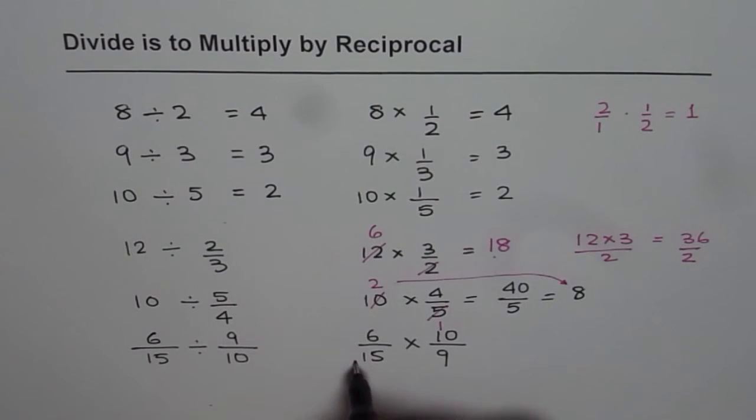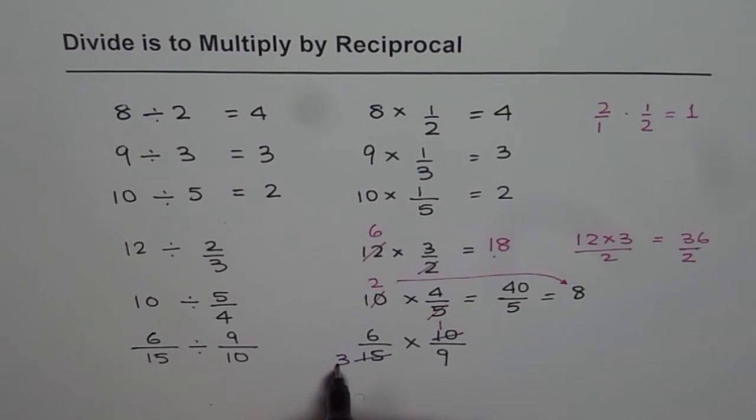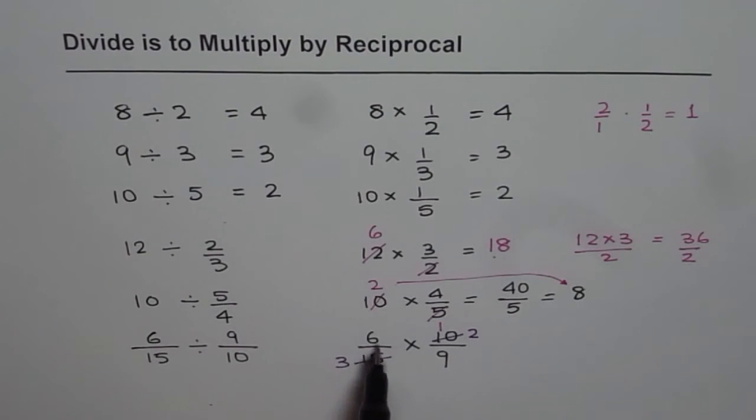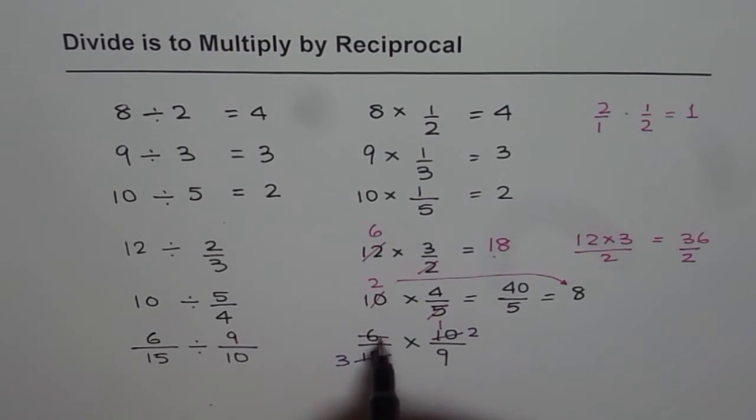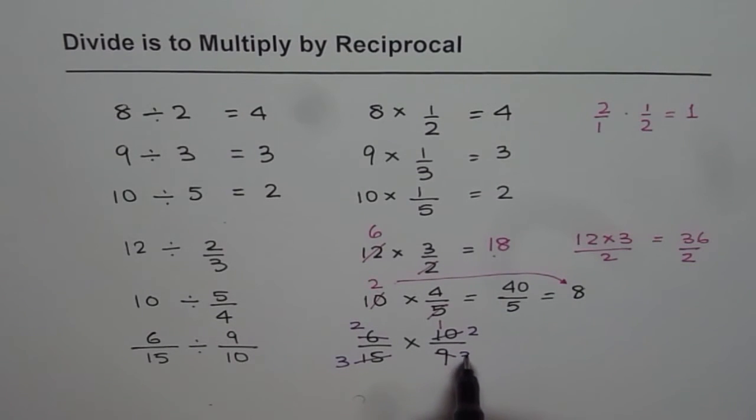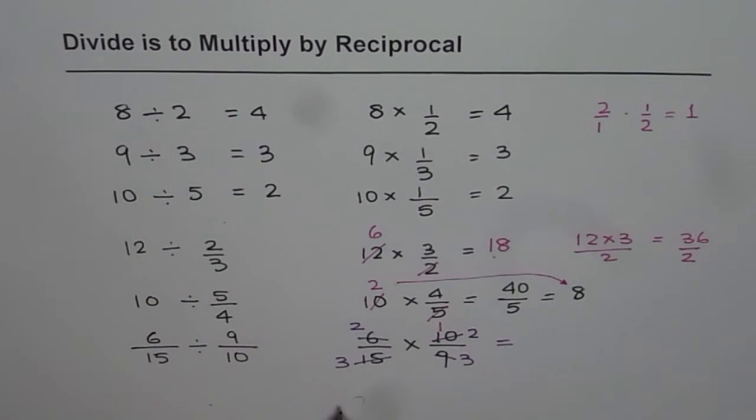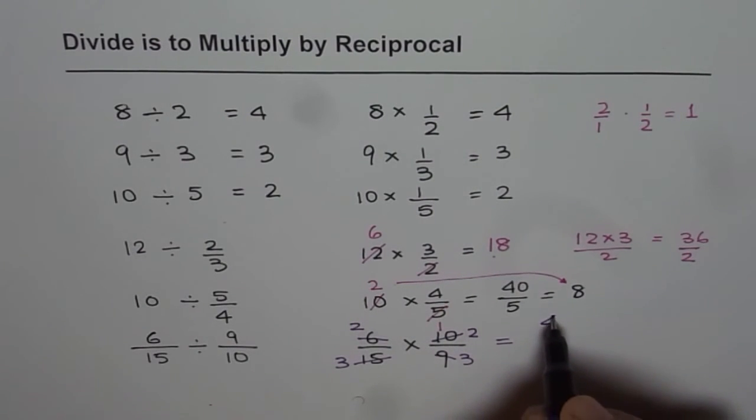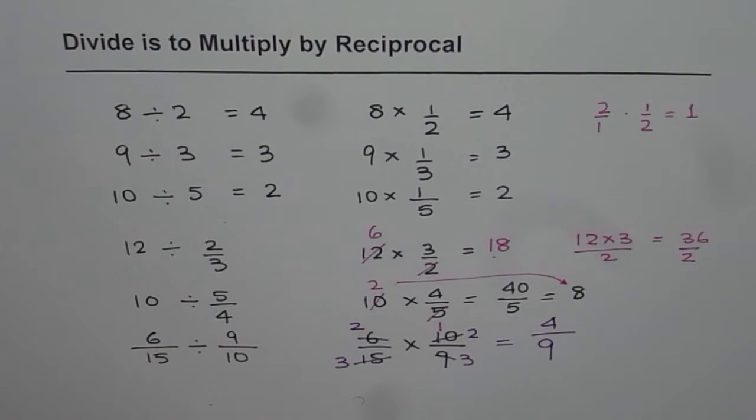We know we can divide 15 and 10 both by 5. So 5 times 3 is 15, 5 times 2 is 10. We can also divide 6 and 9 by 3. 3 times 2 is 6, 3 times 3 is 9. Once we divide by common factors, then we can multiply and get our result. 2 times 2 is 4 in the numerator, 3 times 3 is 9 in the denominator. That's what we get.